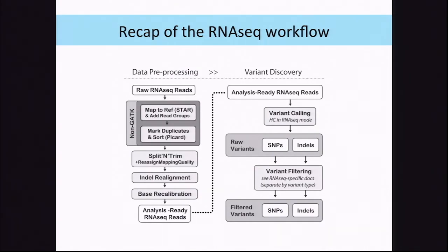To repeat the general processing of RNA: you start with the RNA, run the two-pass STAR mapper, run mark duplicates, then run the tool to split and trim the reads. The next steps are the same as in the DNA process: indel realignment and base recalibration. Then you go to variant discovery using the HaplotypeCaller, but in a slightly different mode — whoever gives the HaplotypeCaller talk will mention that. And then you do the filtering. You don't use VQSR, but currently use hard filters.